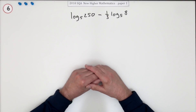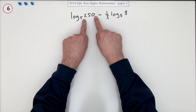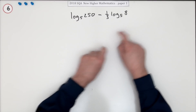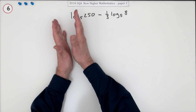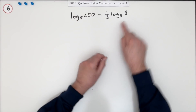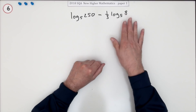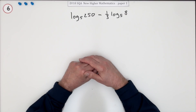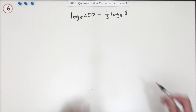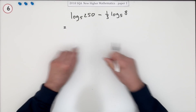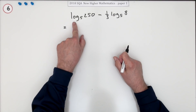You can evaluate straight away if you happen to know those powers — if 250 were an exact power of five you could replace it, and if that 8 were an exact power of five you could replace it and do a bit of arithmetic. But you don't know them, so you're going to have to use the laws of logs.